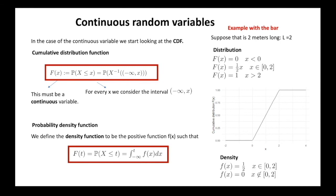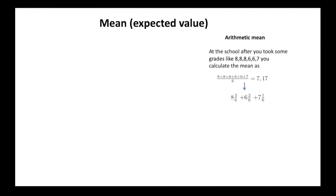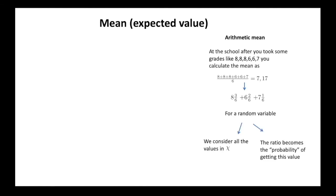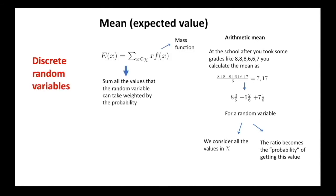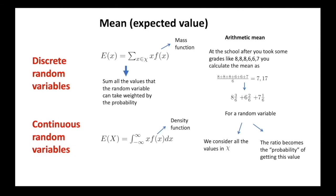Let's introduce the concept of mean. Remember calculating the arithmetic mean of your grades at school? This can be seen as a sum where we sum all the different grades, multiplied by the percentage of times you got them. We do something similar for a random variable in the discrete case: we sum all the values in the sample space multiplied by their probability. In the continuous case, we find a similar formula where we substitute the sum with an integral and the mass function with the density function.